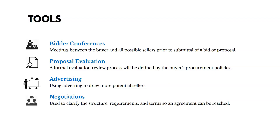Now let's talk about Conducting Procurements — selecting a seller and awarding a contract. Tools include bidder conferences, where you meet with all possible sellers, give them feedback on the work needed, and they can ask questions to make sure everyone understands what's required. You use proposal evaluation as a formal way of evaluating different contract proposals from sellers. You could also use advertising to attract more potential sellers. And negotiations are used to clarify the structure, requirements, and terms so that an agreement can be reached with a potential seller.